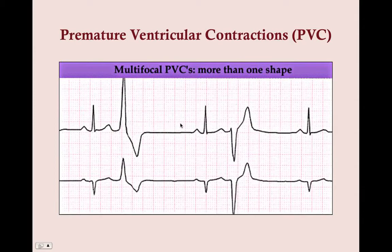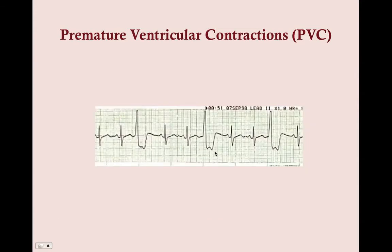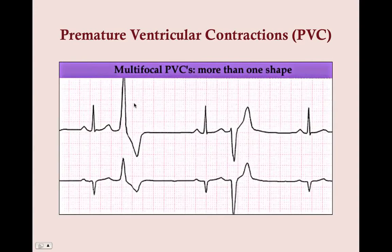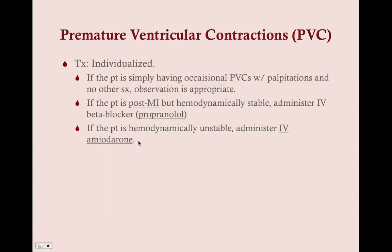You can also see multifocal PVCs, where the PVCs appear in different shapes compared to unifocal PVCs which all look the same. Different shapes indicate different parts of the ventricle are causing the PVCs — multiple focal points. So multifocal means multiple places within the ventricle are causing PVCs, producing these different appearances on the ECG.